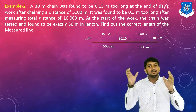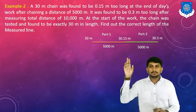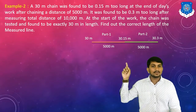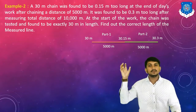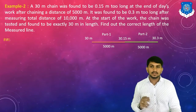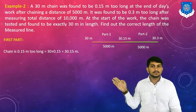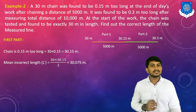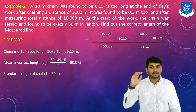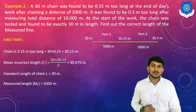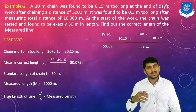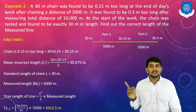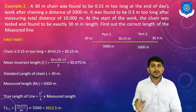We divide this example into part one and part two. For part one: standard length L = 30 meters. Two measurements are taken, so the mean incorrect length L' = (30 + 30.15) / 2 = 30.075 meters. Standard length L = 30 meters; measured length ML = 5,000 meters. True length TL1 = (30.075 / 30) × 5,000 = 5,012.5 meters. This is the actual true length of the first part.